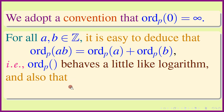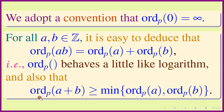It is also easy to deduce that the p-adic valuation of the sum a + b is greater than or equal to the minimum of the p-adic valuation of a and the p-adic valuation of b. That is, the highest power of p dividing a + b is at least the minimum of the highest power of p dividing a and the highest power of p dividing b.